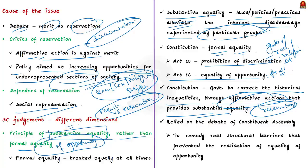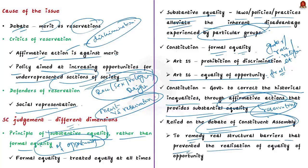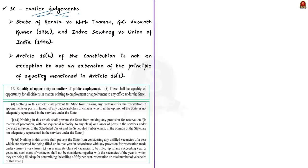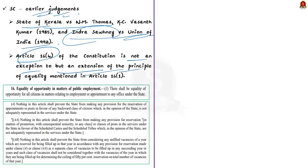The judgment quoted the principle of substantive equality in explaining the need for reservation and relied on constitutional assembly debates. The court reminded that the intent of the framers was to remedy real structural barriers that prevented the realization of equality of opportunity. Building upon earlier landmark judgments such as State of Kerala vs. N.M. Thomas and Indra Sawhney vs. Union of India, the court reiterated that the provision of reservation in Article 16(4) is not an exception but an extension of the principle of equality mentioned in Article 16(1).